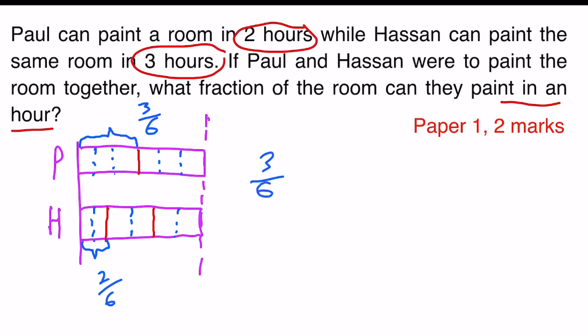So three-sixths plus two-sixths, I get five-sixths. Now, is it clearer?